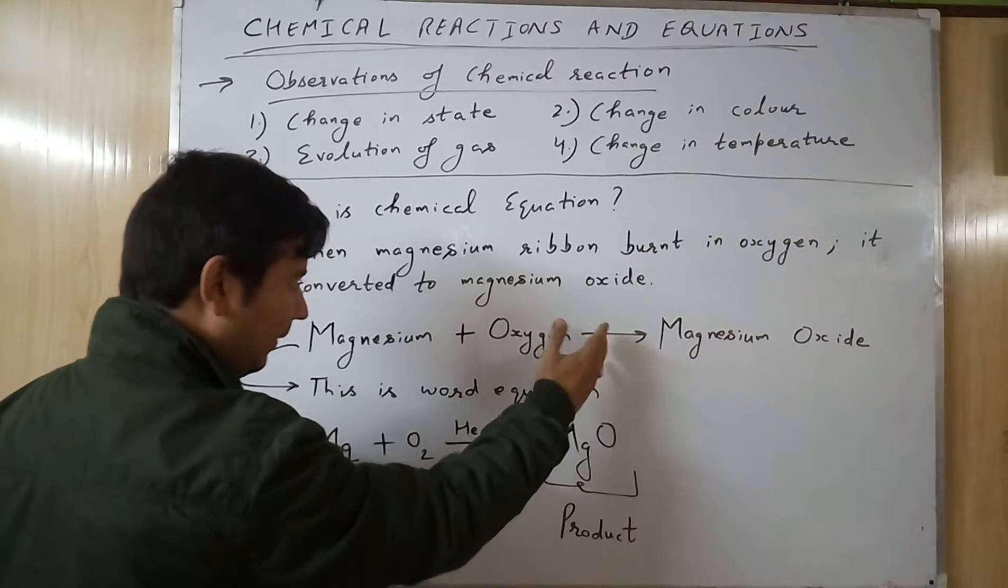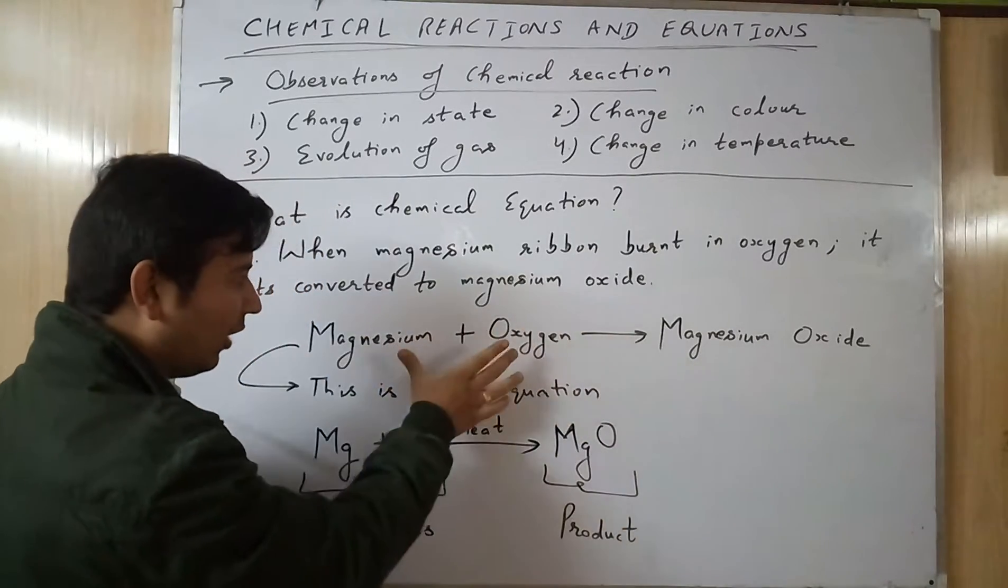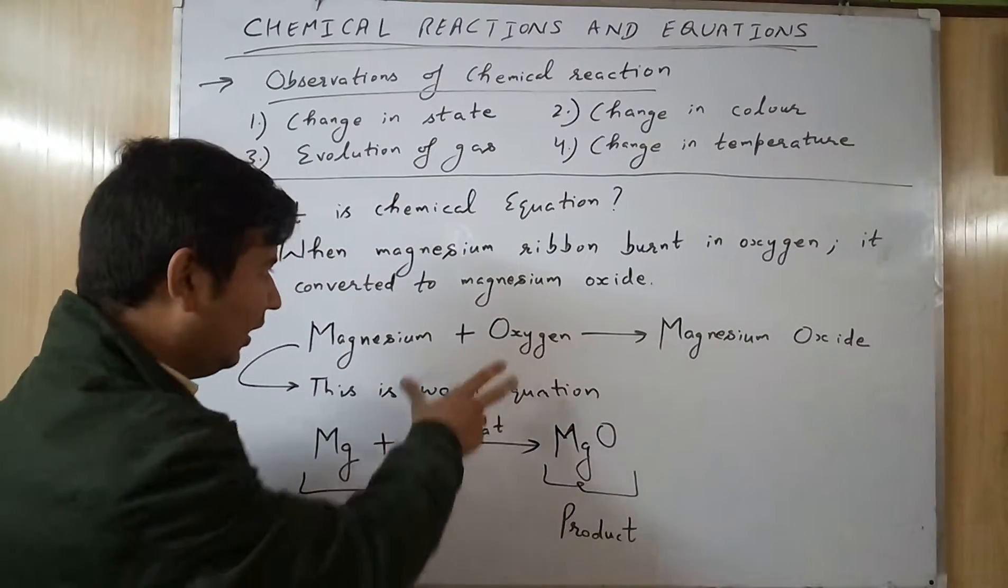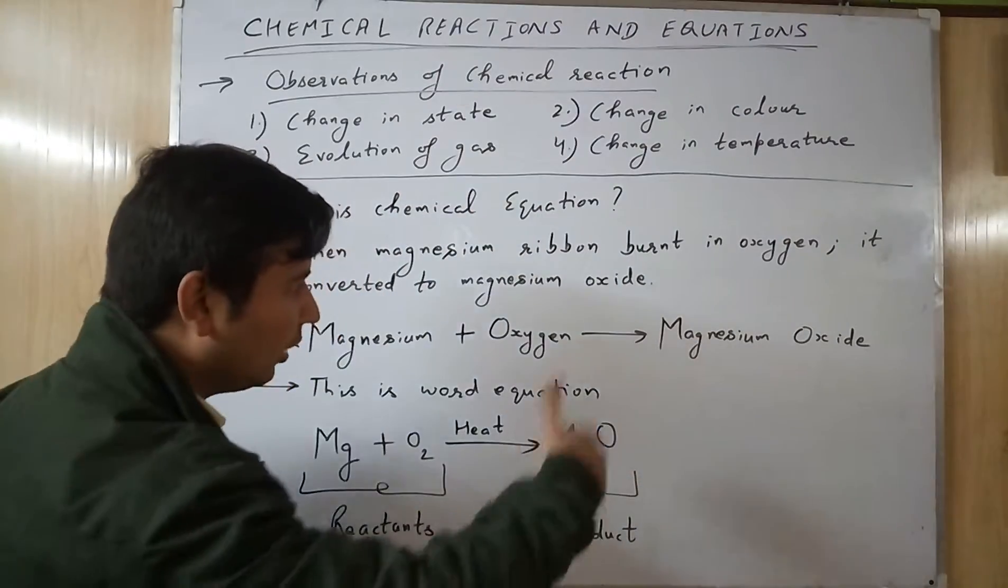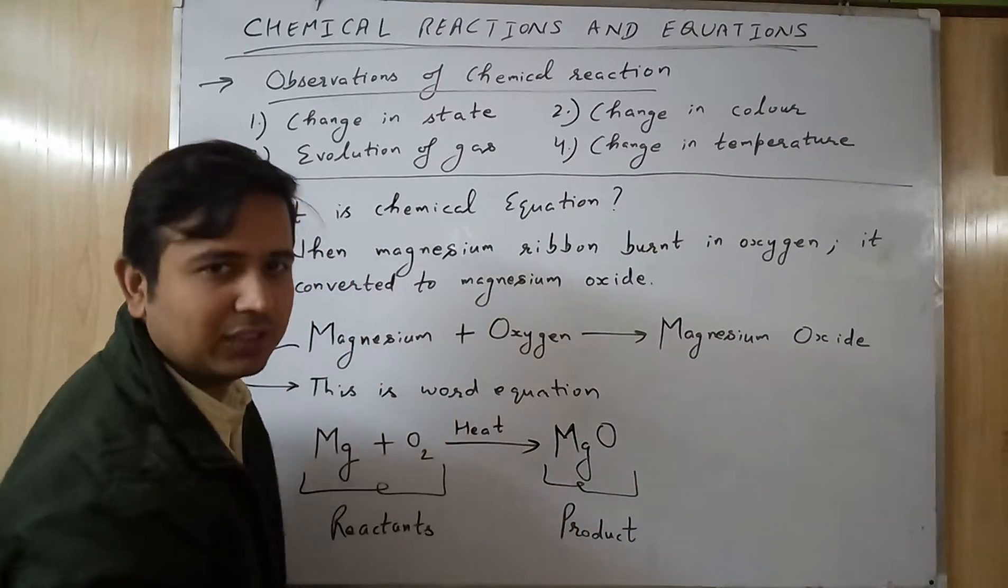This is an arrow. The left side of the arrow describes the reactants - means reactants are going to react and they will form the products. So the right side of the arrow gives you the products.